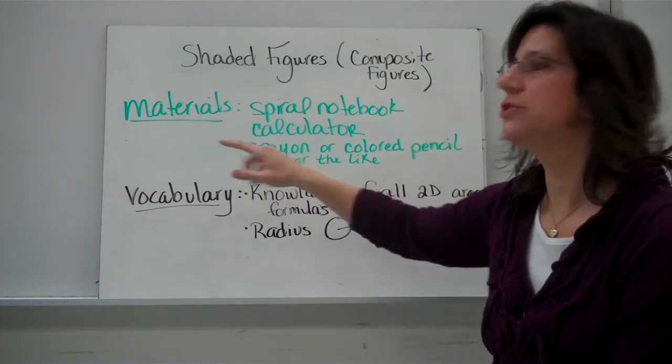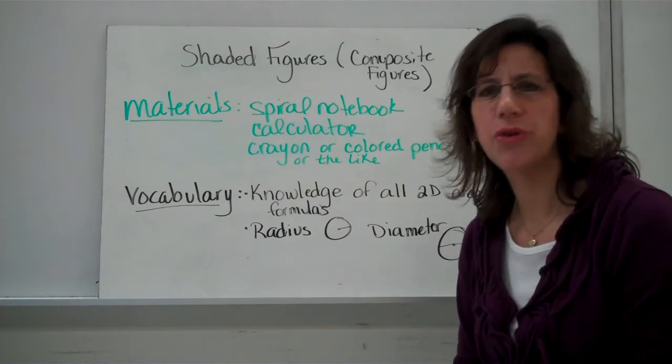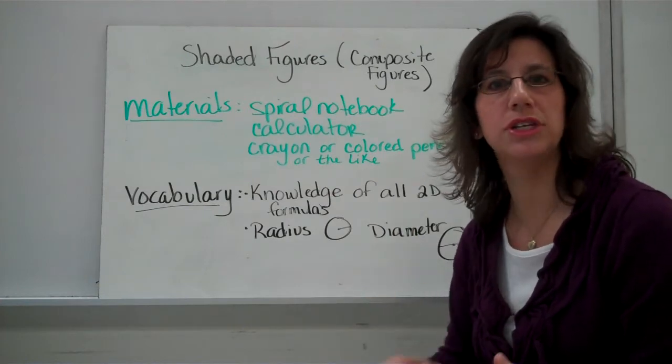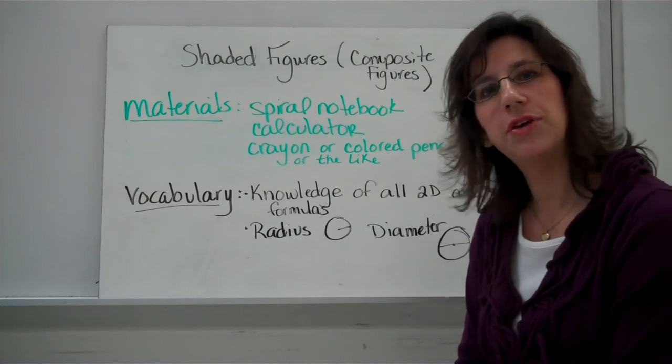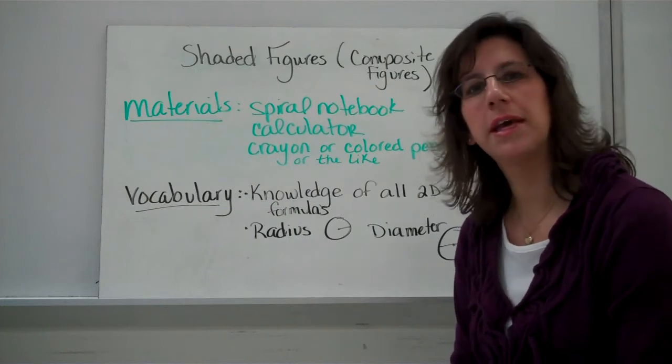So what you're going to need today is your spiral notebook, calculator, and you're going to want to have some kind of crayon or colored pencil or something that you can shade those figures in. Go ahead and pause the video if you need to, go grab those materials and then come on back.